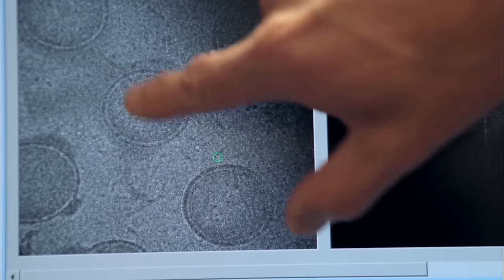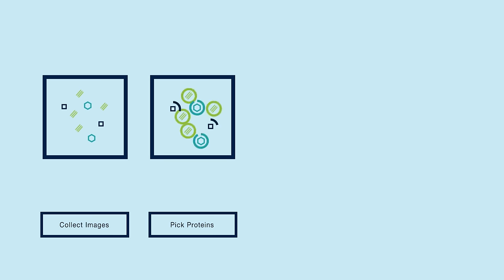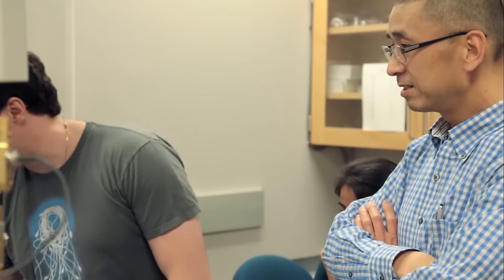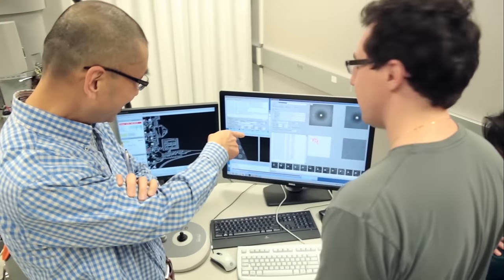A computer algorithm sorts the images and finds pictures of the protein in the same orientation. Then software builds a composite, an accurate, high-resolution, three-dimensional image of the protein. We're using the computation method to average many hundreds of thousands of molecules, or tens of thousands of them together to generate a three-dimensional structure.